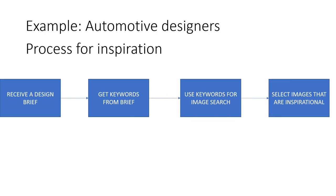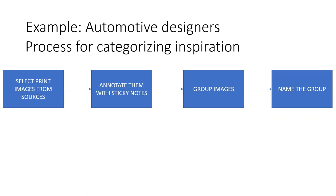The process of inspiration involves receiving a design brief, extracting keywords from that brief, and using those keywords for image search from various sources such as internet, magazines, and books. Then they select the images that are inspirational. The process of categorizing inspiration involves getting a hard copy of the images, annotating them according to their particular field with sticky notes, grouping those images, and naming the group.